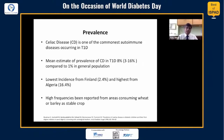Celiac is the commonest, or one of the commonest autoimmune diseases — apart from hypothyroidism — occurring in type 1 children and adults. It is estimated that about 8% of type 1 diabetes individuals actually have celiac disease. Compared with 1% in the general population, it's 8 times commoner in patients with type 1 diabetes. Of course, there are regional variations; the lowest incidence is from Finland and the highest is from Algeria.